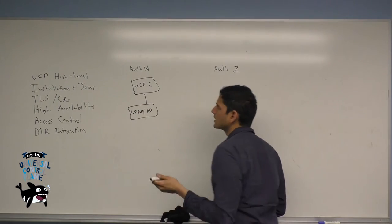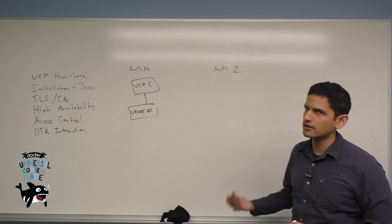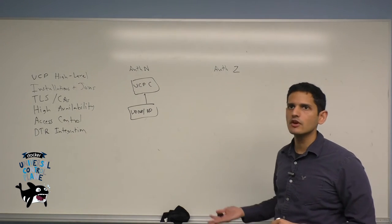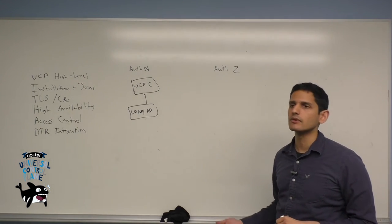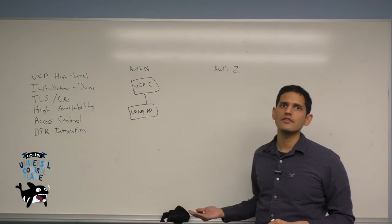It's important to note that at any time in UCP, you have to choose one or the other modes. Either you can run in managed mode and manage your own users, or you can use a back-end LDAP Active Directory and import users and teams directly into UCP. So that's auth-N.